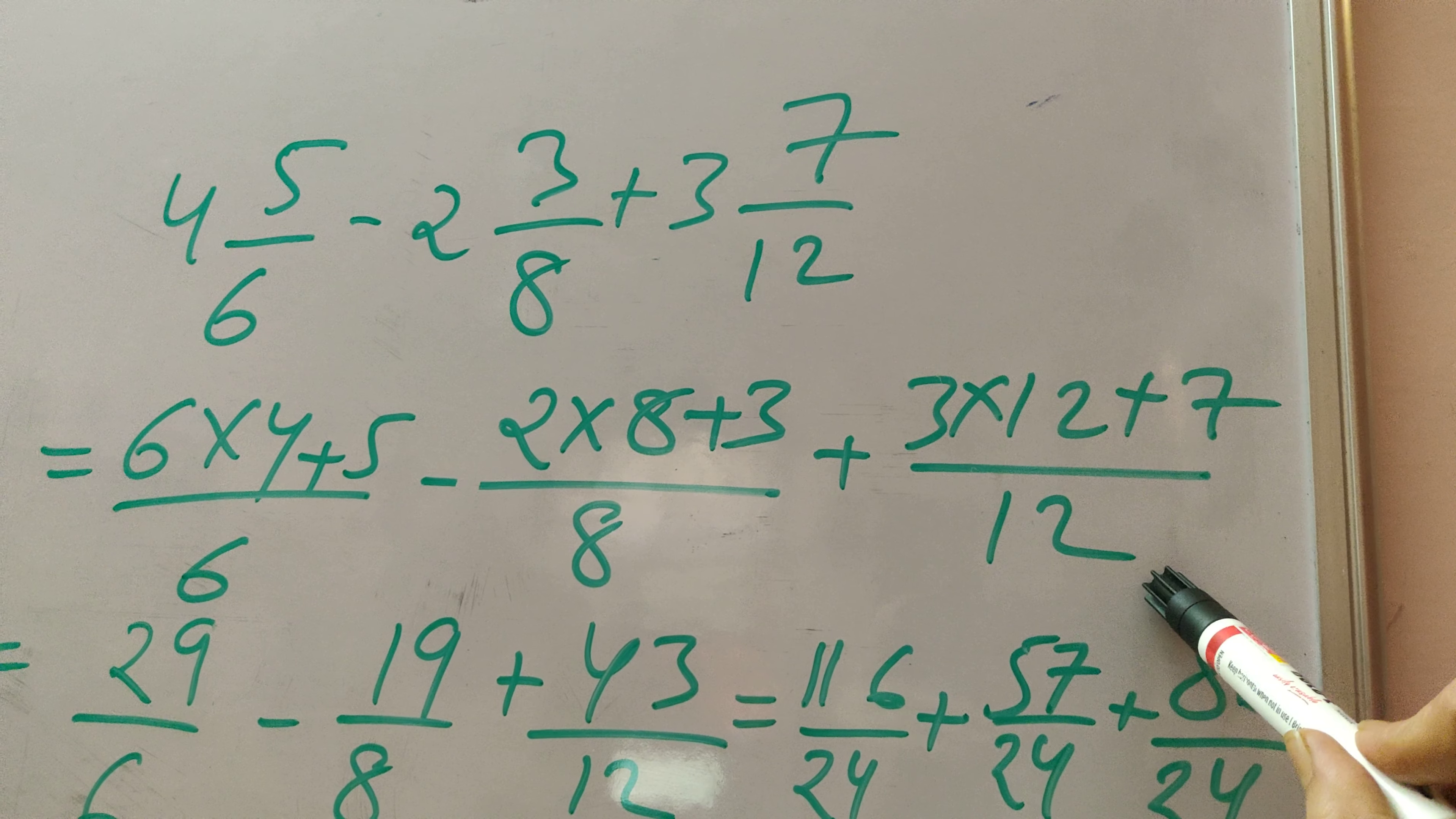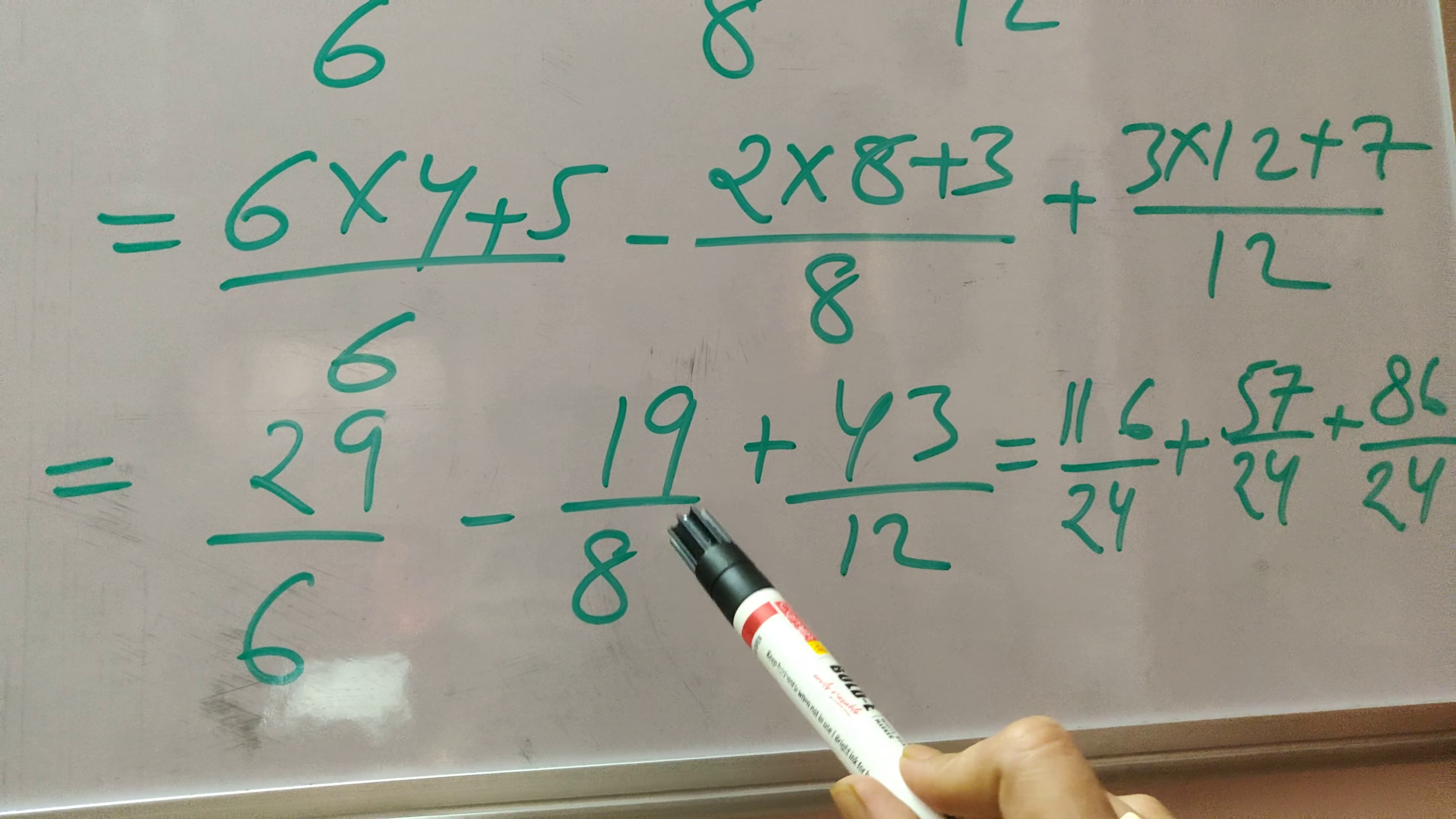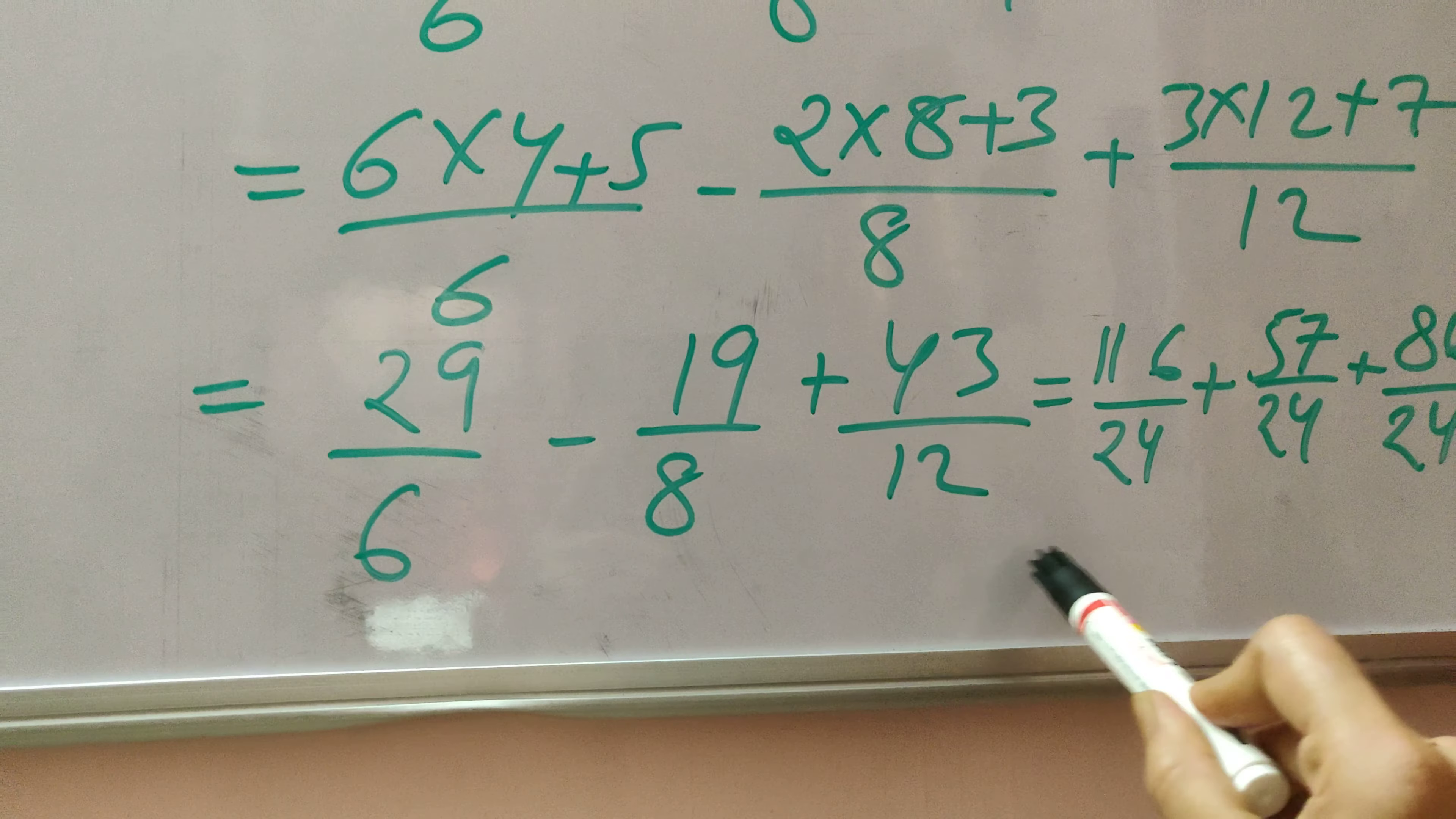Here you can see, divided by 12. So it will come out as 29/6 minus 19/8 plus 43/12, where all of these are actually improper fractions.